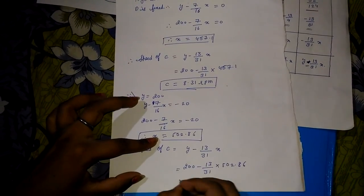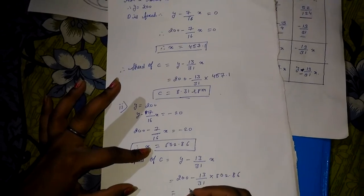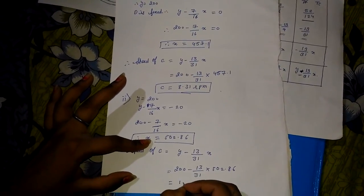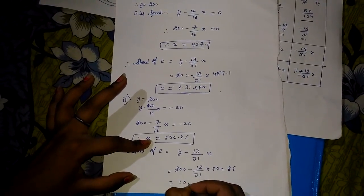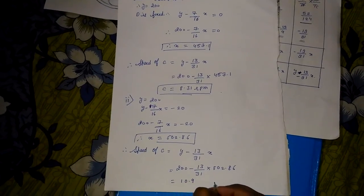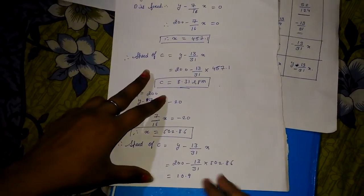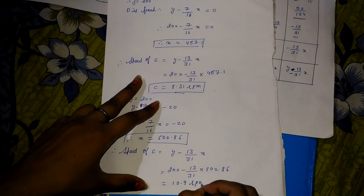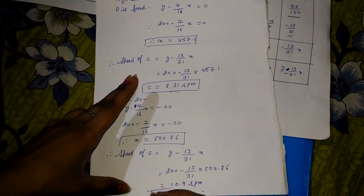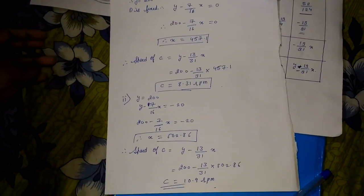For the second condition, speed of C = Y minus (13/31)X = 200 minus (13/31)(502.86). The final answer is 10.9 RPM. Thank you for watching.